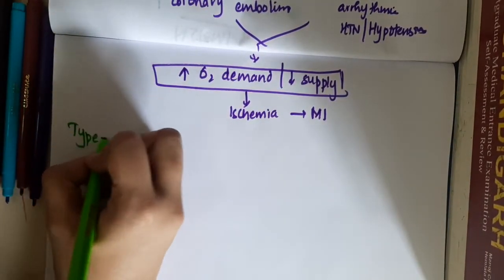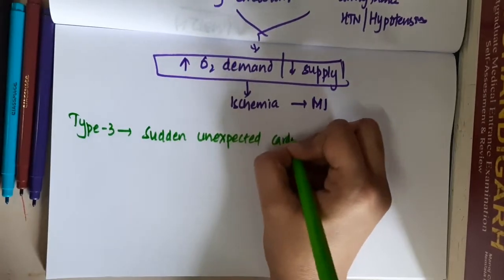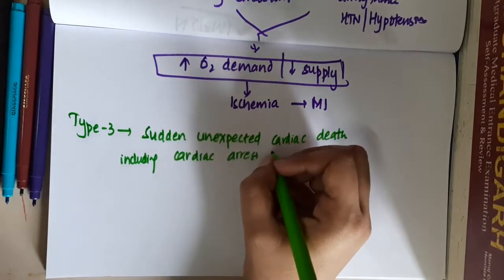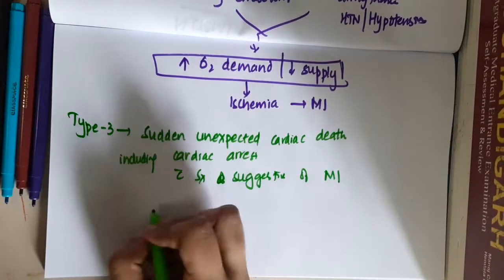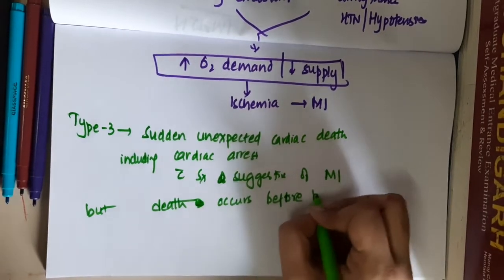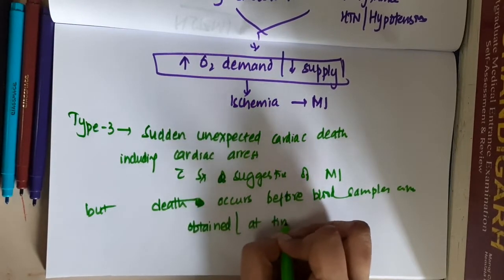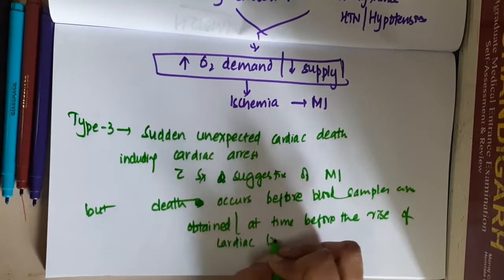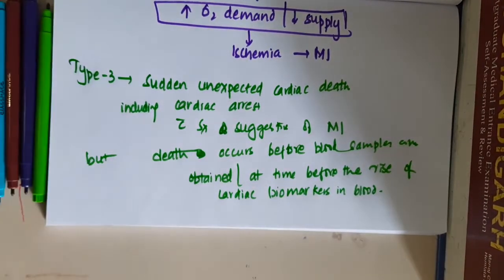Then we have Type 3. In Type 3, there occurs sudden unexpected cardiac death, including cardiac arrest, often with symptoms suggestive of MI. However, death occurs even before blood samples are obtained, or before the rise in cardiac biomarkers. The patient has MI but death occurs before cardiac biomarkers have raised. This is Type 3 — sudden unexpected cardiac death.